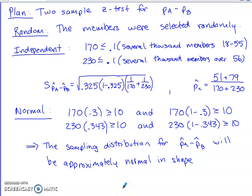So in my Plan, I'm dealing with two samples, I am dealing with proportions, so I am doing a z-test and it's for a difference of those sample proportions. We need there to be randomness, so now we're going to run through those conditions that need to be satisfied in order for us to actually carry out our inference procedure. The members were selected randomly from both the younger age group and the older age group. We are going to maintain independence here because each of those age groups had several thousand members at the exercise center, so 170 is less than or equal to 10 percent of all of the younger members and 230 is less than 10 percent of the older members.